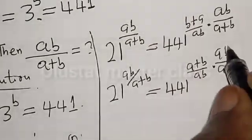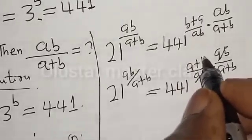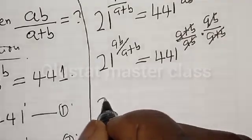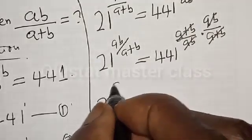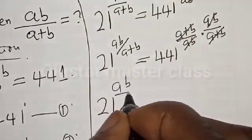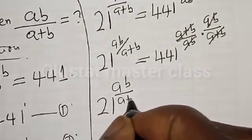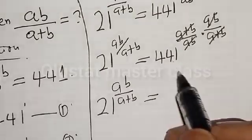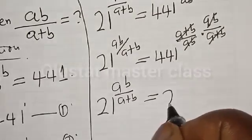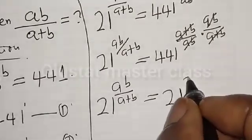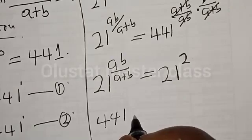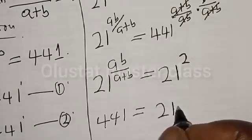The A plus B and AB terms cancel. We are left with 21 raised to power AB divided by A plus B is equal to 441 raised to power 1. So, 441 is the same thing as 21 squared, because 21 multiplied by 21 is equal to 441.